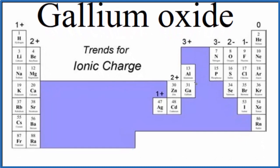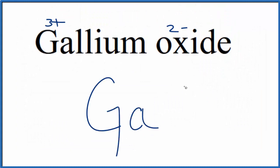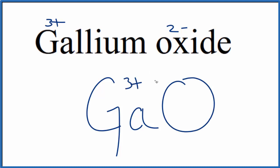Gallium is right here in group 13, sometimes called 3A — normally three plus. And then oxygen, that's going to be two minus. So we have our three plus and our two minus. We write the element symbol for gallium, that's just Ga, and then oxide — that's oxygen, O. The gallium is three plus, the oxygen is two minus.